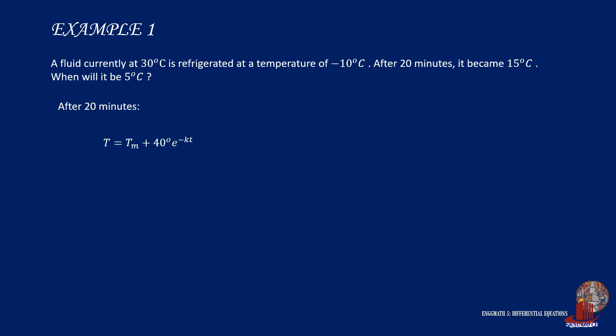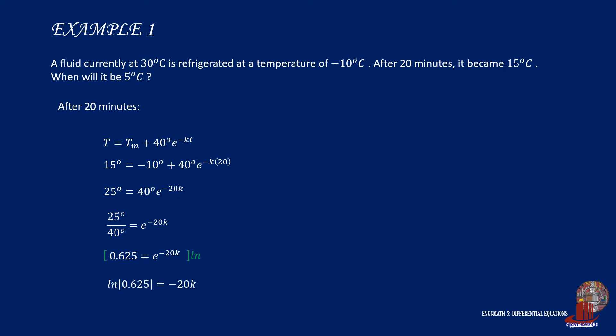Another scenario is at 20 minutes where the temperature became 15 degrees. Plugging these values into the equation gives 15 degrees is equal to negative 10 plus 40 degrees times E raised to negative K times 20. Simplifying by moving negative 10 to the opposite side gives 25 degrees is equal to 40 degrees times E raised to negative 20K. Dividing by 40 degrees gives 0.625 is equal to E raised to negative 20K. To eliminate the exponent E, multiply the whole equation by ln so E and ln cancel out and we get the natural logarithm of 0.625 is equal to negative 20K. Dividing by negative 20 gives K as 0.0235002.